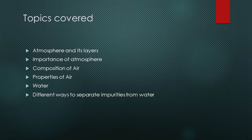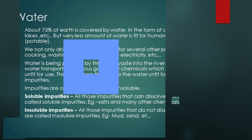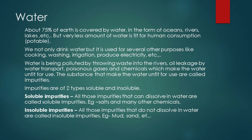Basically, we are going to discuss how to separate impurities which are mixed in water by different processes. Water — about 75% of earth is covered by water in the form of oceans, rivers, ponds, lakes, etc. But very little amount of water is fit for human consumption, i.e., potable water.